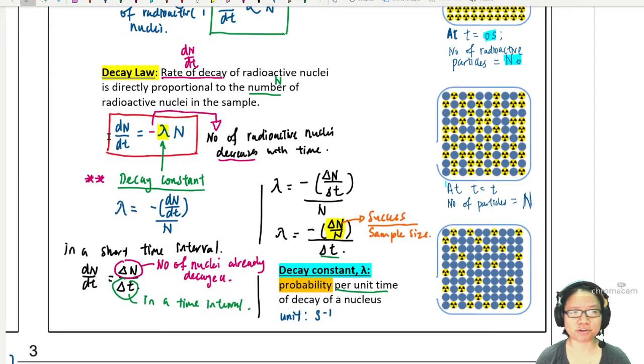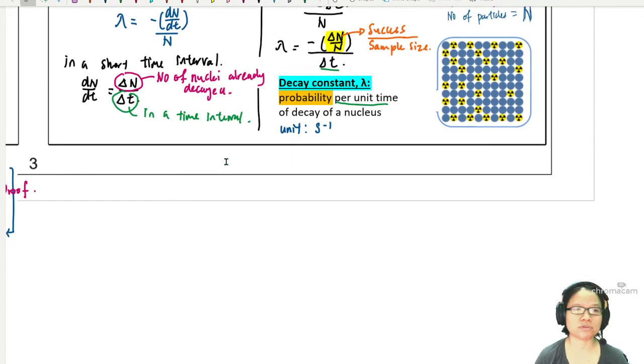I'm going to start the derivation from the functional equation of decay law, which is dN/dt equals negative lambda N. Let's go ahead, bring that down with me. dN/dt equals negative lambda N. If dN/dt is negative, it means that N decreases with t. The gradient is negative.